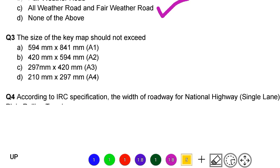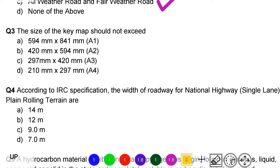Next question: the size of the key map should not exceed. Option A: 594 mm into 841 mm. Option B: 420 mm into 594 mm. Option C: 297 mm into 420 mm. Option D: 210 mm into 297 mm. The correct answer is option D, 210 mm into 297 mm, that is A4.